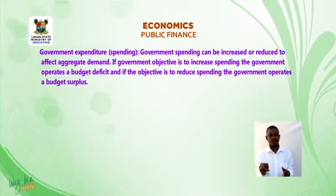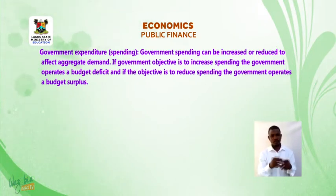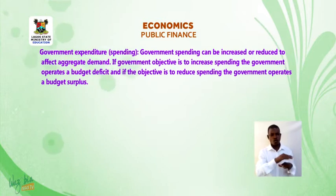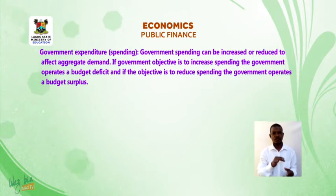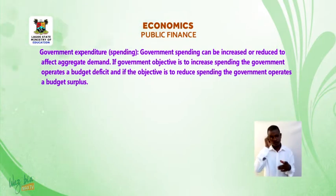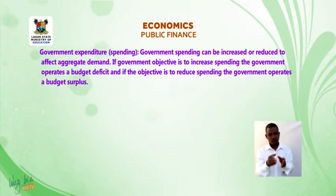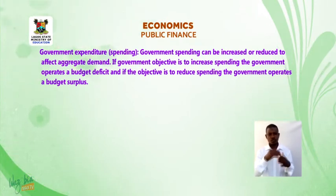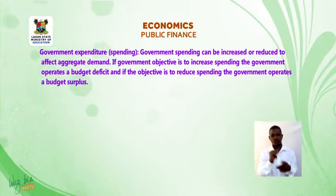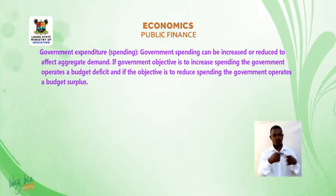Indirect taxes such as an increase in value added tax and excise duties will increase prices and reduce purchasing power. Two, government expenditure or spending — government spending can be increased or reduced to affect aggregate demand. If the government objective is to increase spending, the government operates a budget deficit, and if the objective is to reduce spending, the government operates a budget surplus.